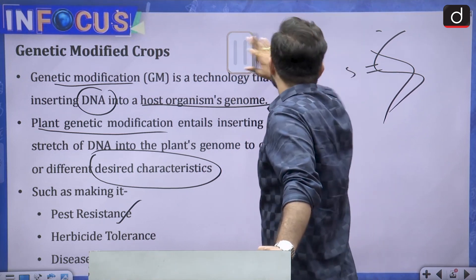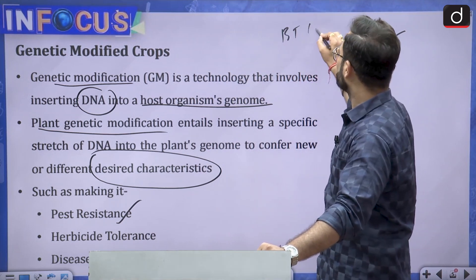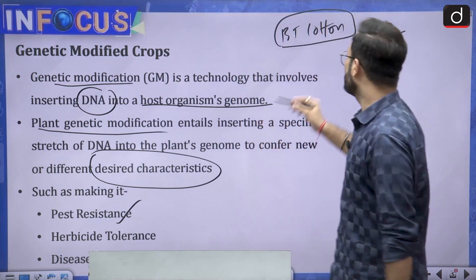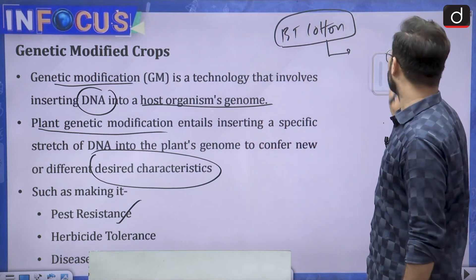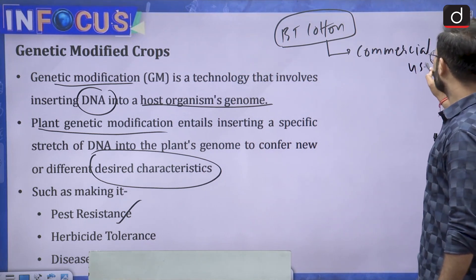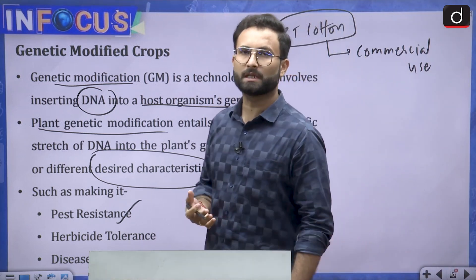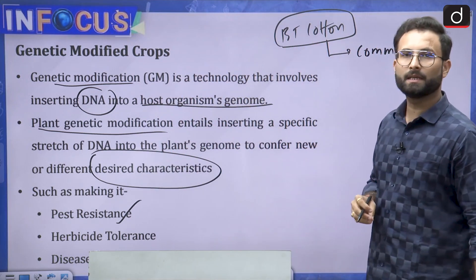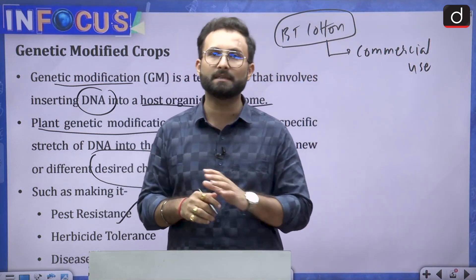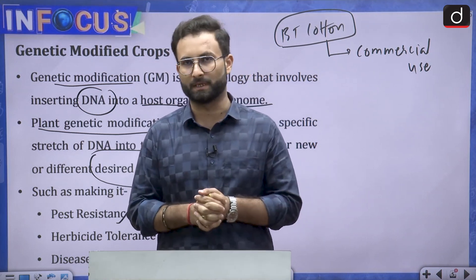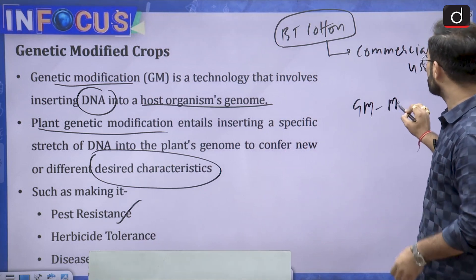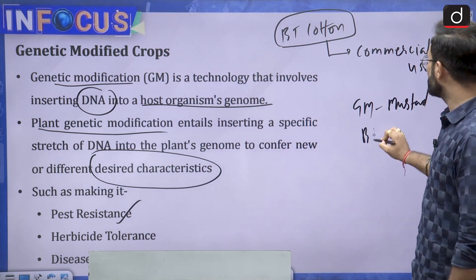In the current situation in India, we have Bt cotton. Bacillus thuringiensis is the gene used in Bt cotton. This hybrid crop is approved for commercial use. Since cotton is not an edible crop, it is allowed in India. In India, we do not have any genetically modified crop approved for human consumption. Other than Bt cotton, we have GM Mustard which is under trial, and Bt brinjal as well.